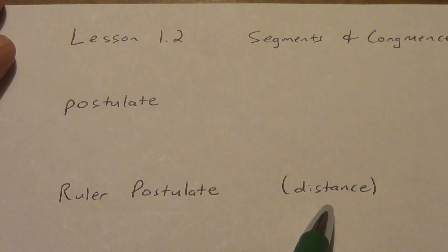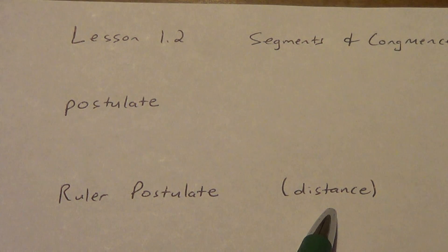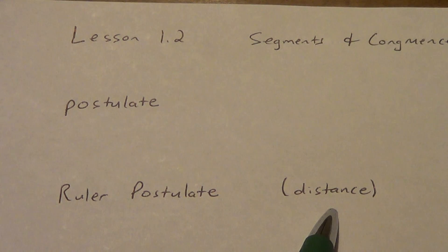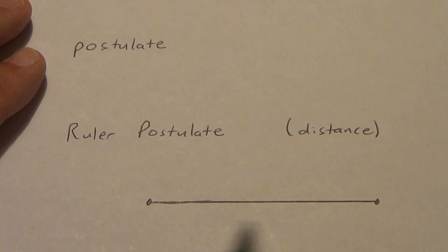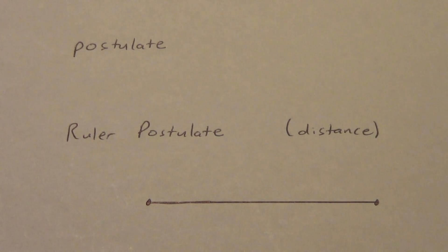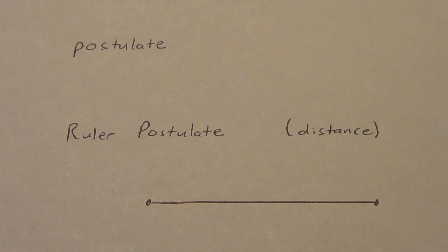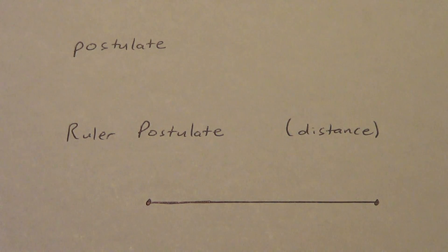I'm going to read the Ruler Postulate out of your book — don't copy it all down, you can look in your book if you want, but I'm going to shorten it up for you. It says the points on a line can be matched with the real numbers, like on a number line, and the real number that corresponds to a point is the coordinate of that point.